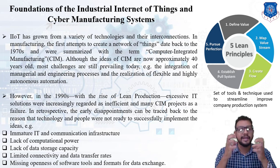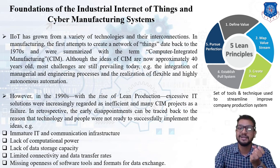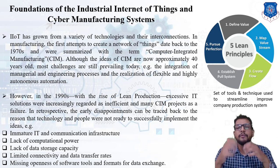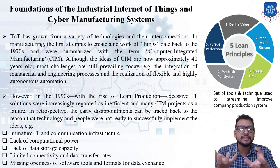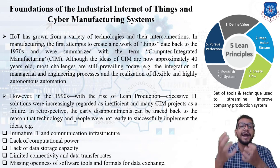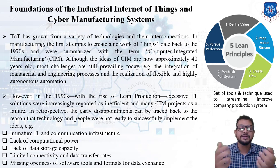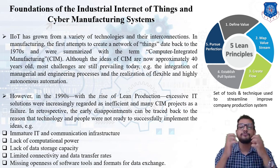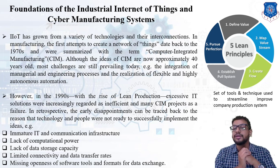The problem because of lean production was that excessive IT solutions were increasingly regarded as inefficient, meaning we were not focusing on IT solutions in the 90s. Because of that, many CIM projects already failed. A retrospective revealed various loopholes: immature IT and communication infrastructure, lack of computational power, lack of data storage capacity, limited connectivity and data transfer rate, and missing openness of software tools and formats for data exchange. Due to all these drawbacks, CIM projects were failing.